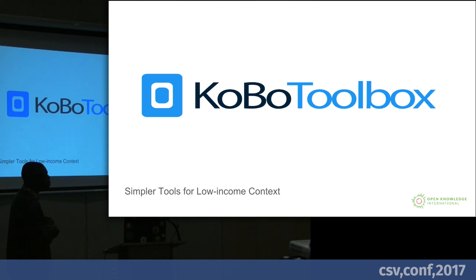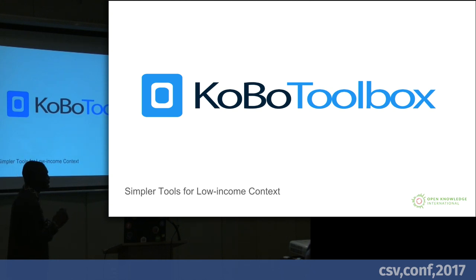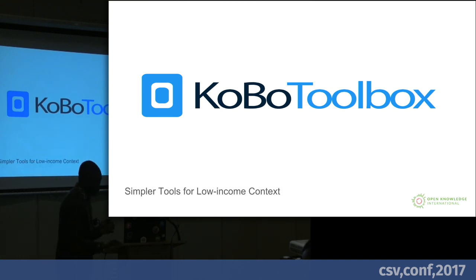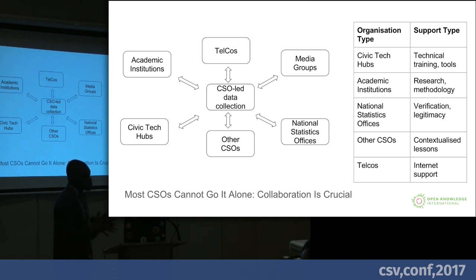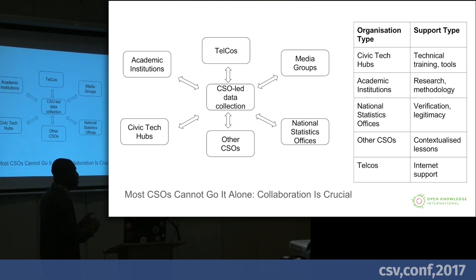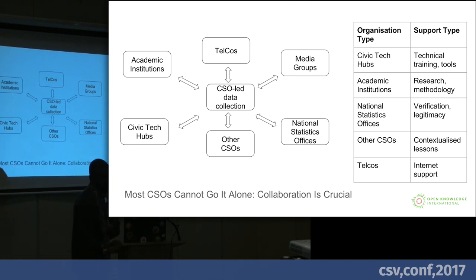One of the lessons we are learning is we need to build simpler tools for low-income contexts. An example is Kobo Toolbox — it's helped reduce the headache of that really complicated process by making it easier to create a questionnaire on a platform, use a simple mobile phone that doesn't require a lot of storage or data, collect data offline, and then once you get internet access, send it to a dashboard. Most CSOs cannot go it alone when it comes to data collection — it's so complicated that we need to think about potential partnerships: working with telcos, media groups, national statistics offices, civic tech hubs. There are a lot popping up across Africa with capabilities to train or provide access to tools and resources. Academic institutions can help think about questions like the unique identifier issue.